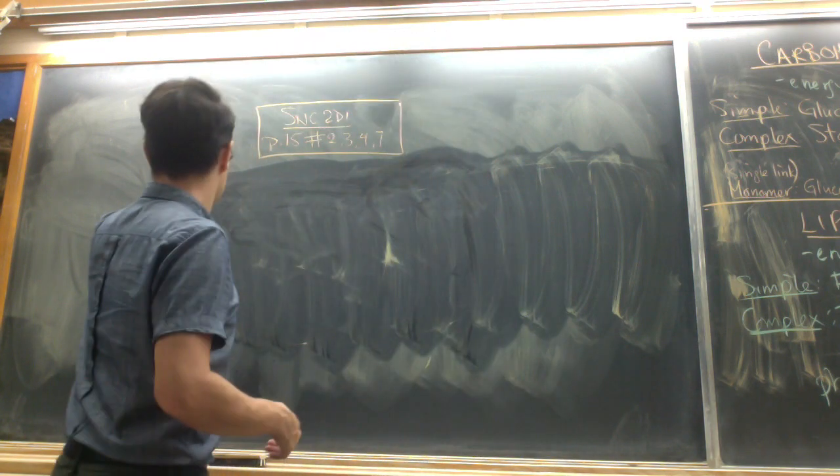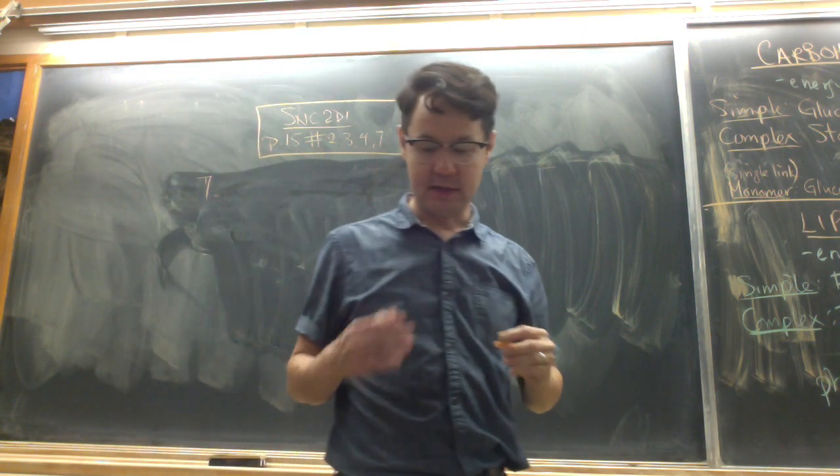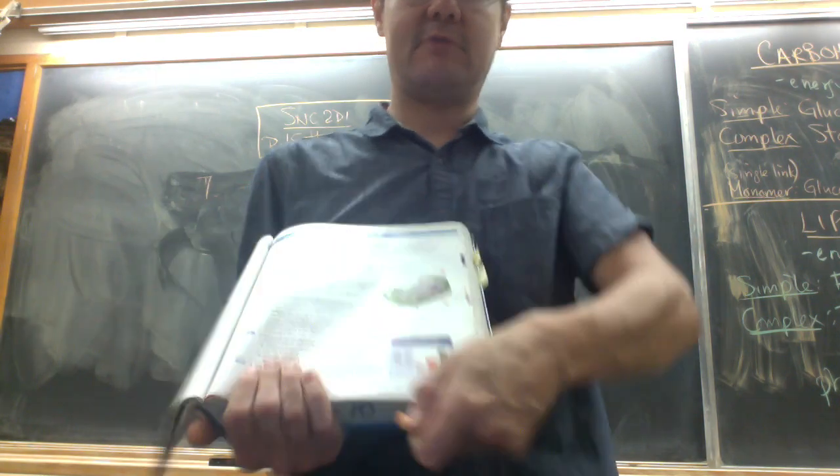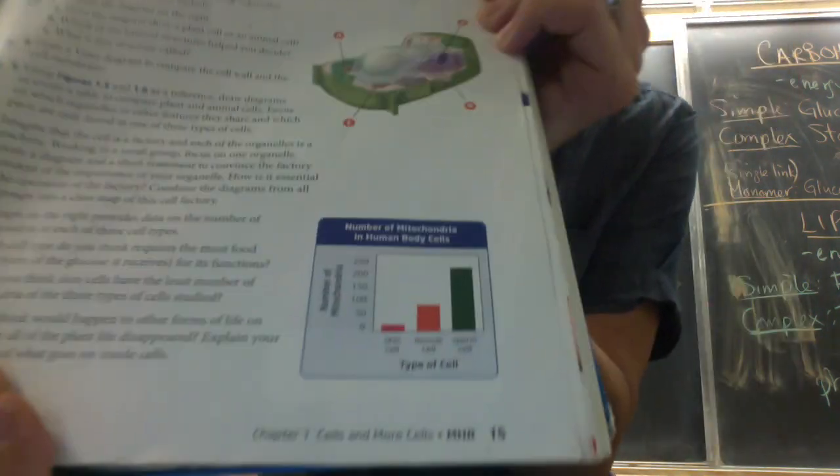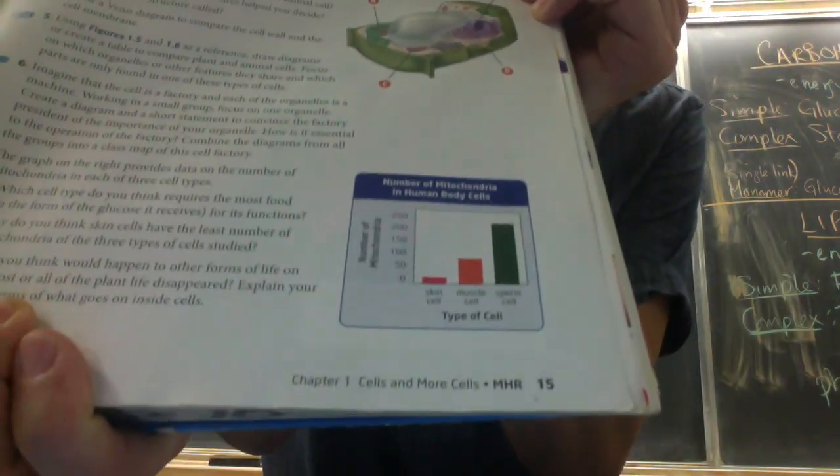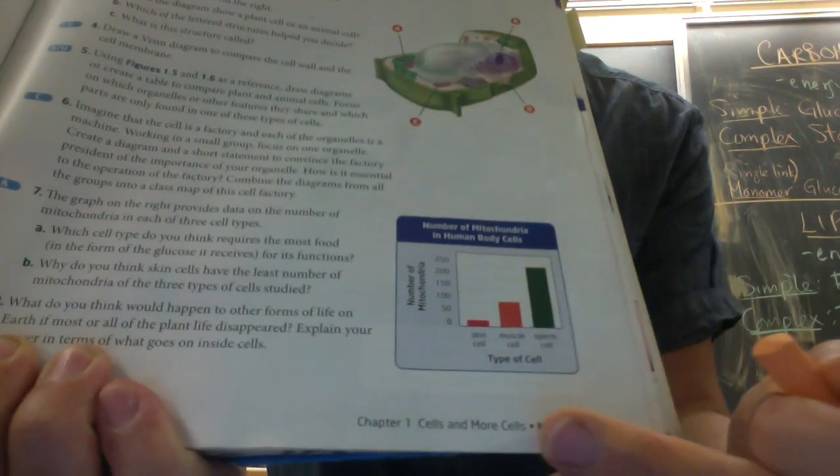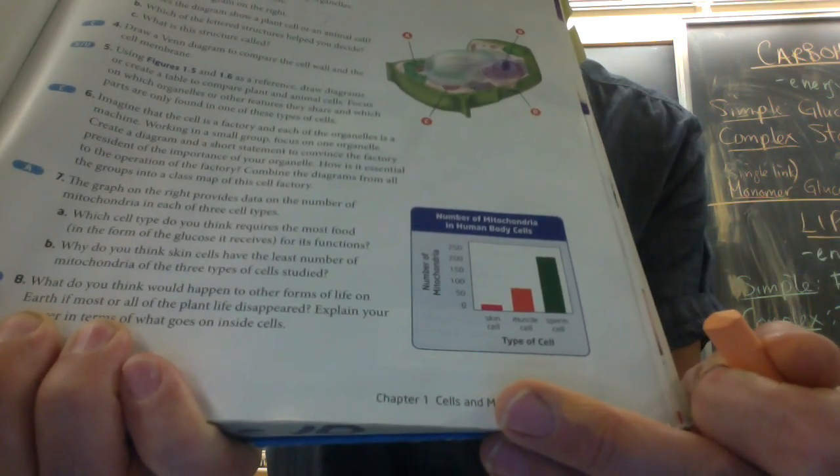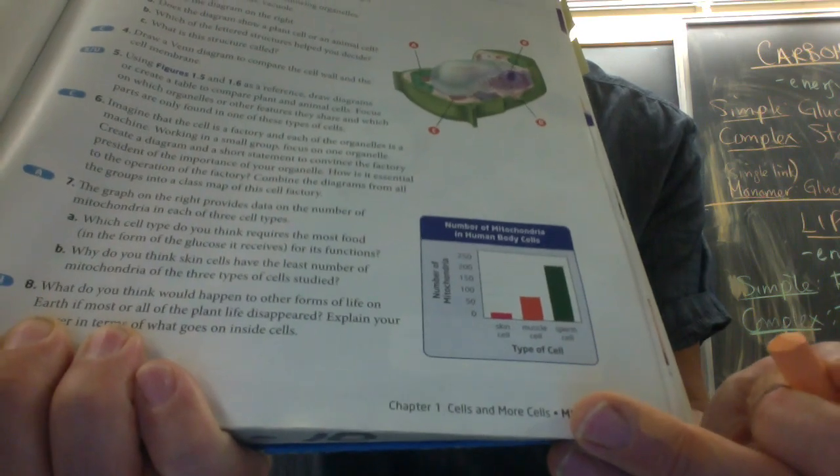Number seven. There's a little graph showing how many mitochondria. This is a graph here, I don't have a book with you. Okay, so number of mitochondria in human body cells, and we see a skin cell has not very many, muscle cells have a few more, and sperm cells have a lot.